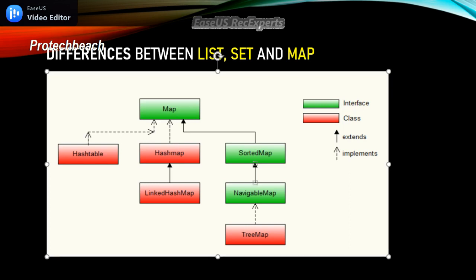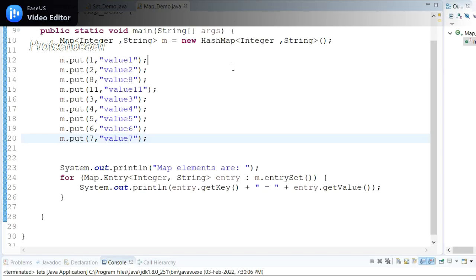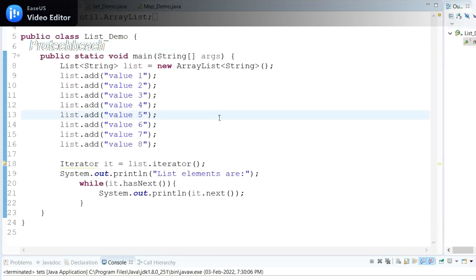Now we'll move on to the exact differences between List, Set, and Map interface. The first difference is regarding order. The List maintains the insertion order, Set does not maintain insertion order, and similarly the Map does not maintain the insertion order. Let me go back to Eclipse to demonstrate this.